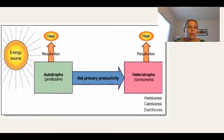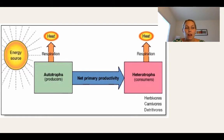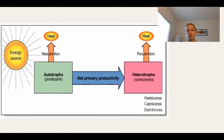This diagram summarizes the flow of energy in an ecosystem. All living systems require an input of energy in order to function. The main source of energy for life on Earth is the sun. Energy from the sun is captured by autotrophs or producers, which use photosynthesis to convert the sun's energy into sugar or food.